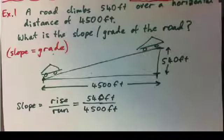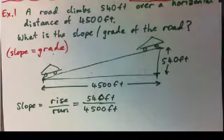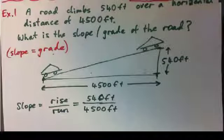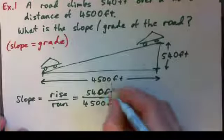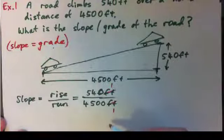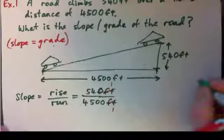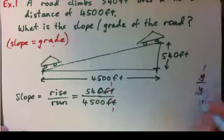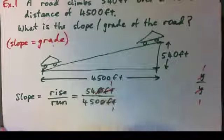The slope or grade equals rise over run, which is 540 over 4500. Now we should try to simplify this — write it as a fraction and also get it as a percentage, because that's how they'll give you a road grade, like 7% or 3% or 6%. Feet cross cancel, and dividing top and bottom by 10 gives us 54 over 450.